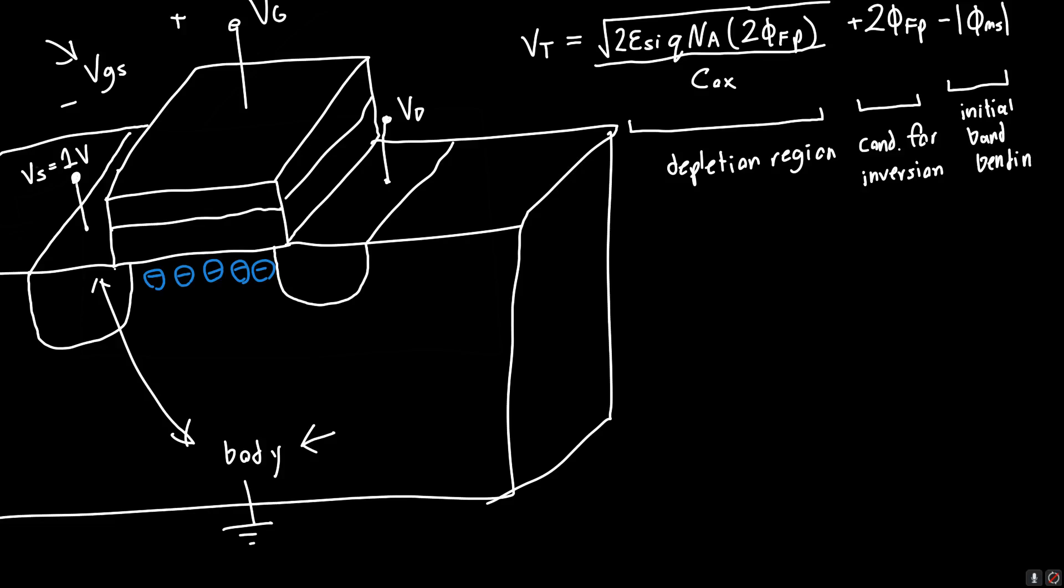I'm ignoring the term involving bound oxide charge just to make this conceptually simpler. If we want to find a difference in threshold voltage, the inversion term isn't going to be relevant because it's constant. Once we hit 2 phi_FP we achieve inversion. Similarly, phi_MS isn't going to change. So the only term we have to worry about is this one on the very left.